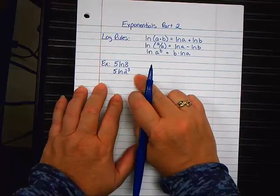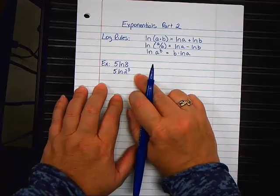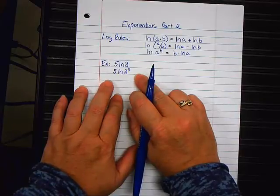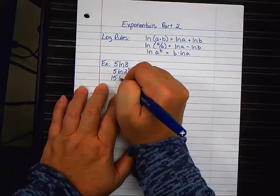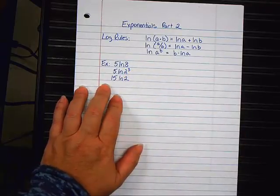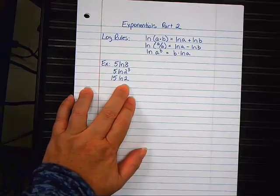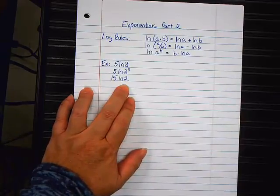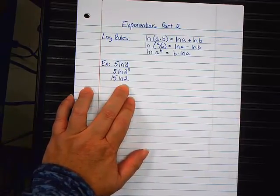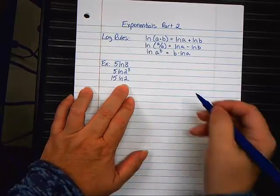Now, where can that three go? To the front. And what will it do with the five? It'll make 15 natural log of two. That is considered simplified. Because this is now as small as it can be. 15 natural log of two. It's like pulling as much out of a radical as you can. You're pulling stuff out of a log.